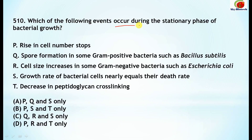Question 510: Which of the following events occur during the stationary phase of bacterial growth? The correct events are: rise in cell number stops; spore formation in some gram-positive bacteria such as Bacillus subtilis; and growth rate of bacterial cells nearly equals their death rate. Options P, Q, and S are correct — option A.